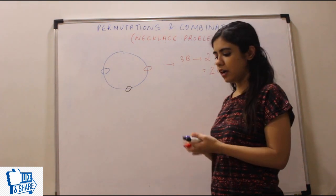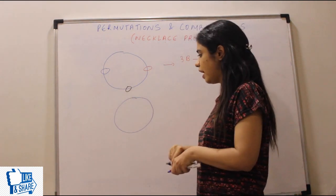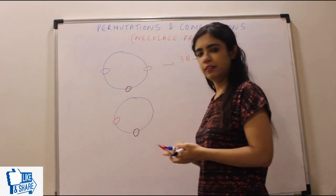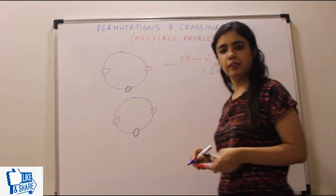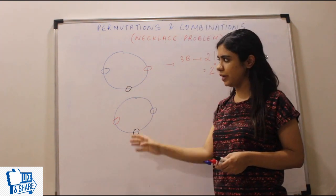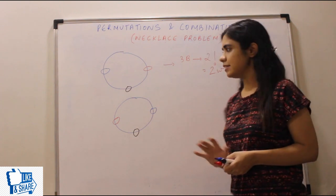Now two ways kaise hoga? One is this. Another one would be probably, you could have let's say black at the same position, red here and blue here. This is the second way. This is the first way. This is the second way. In two ways you could arrange the two necklaces.